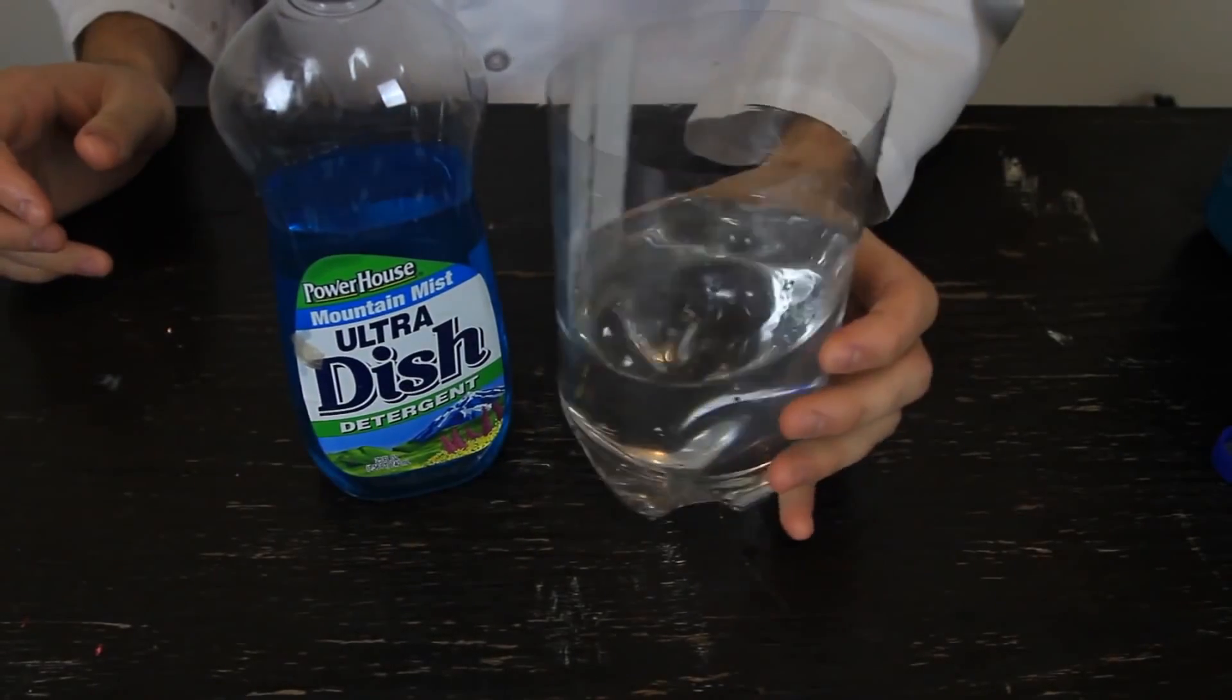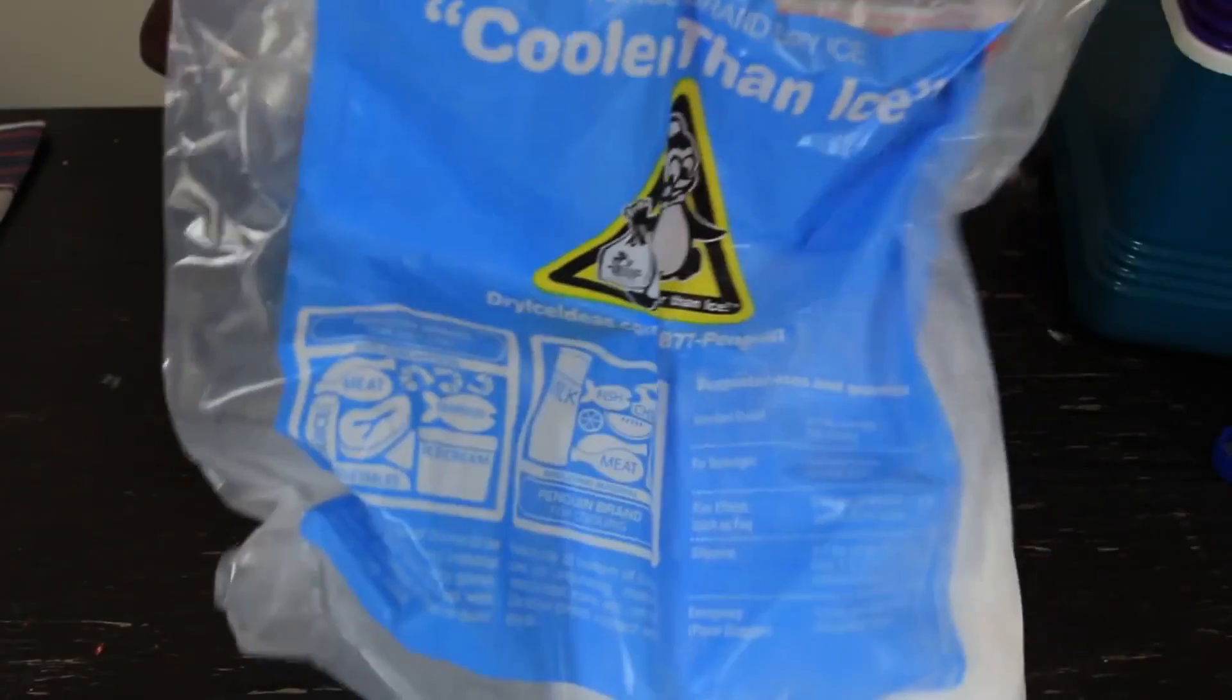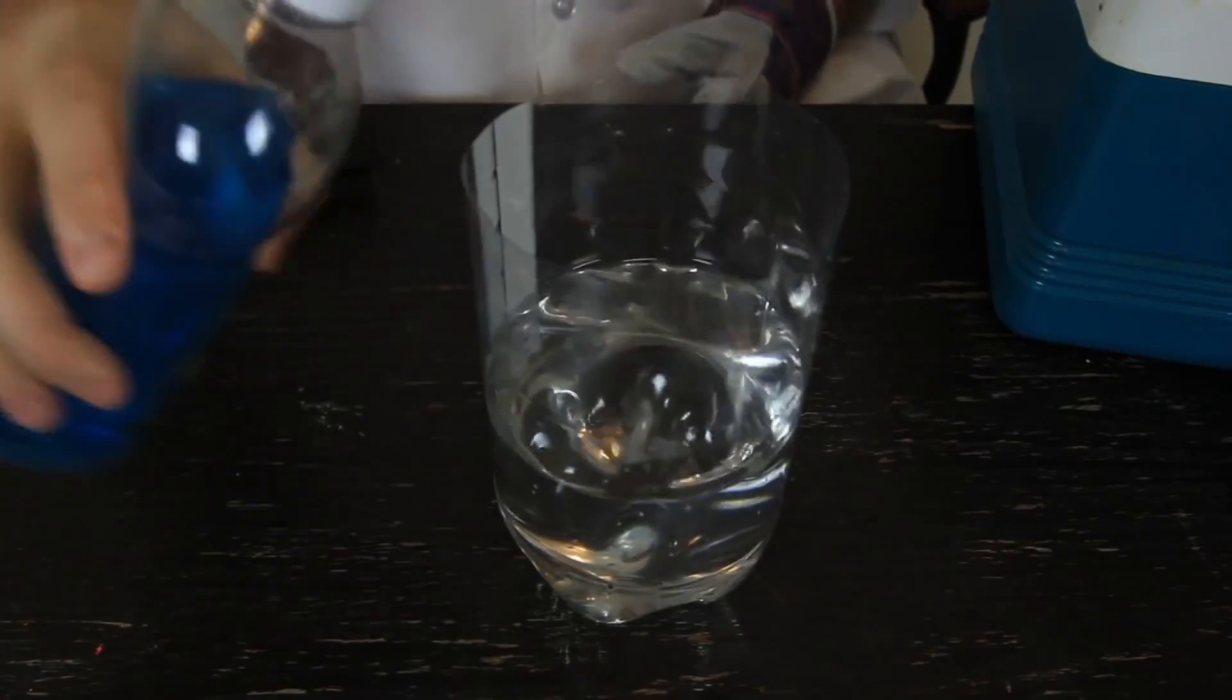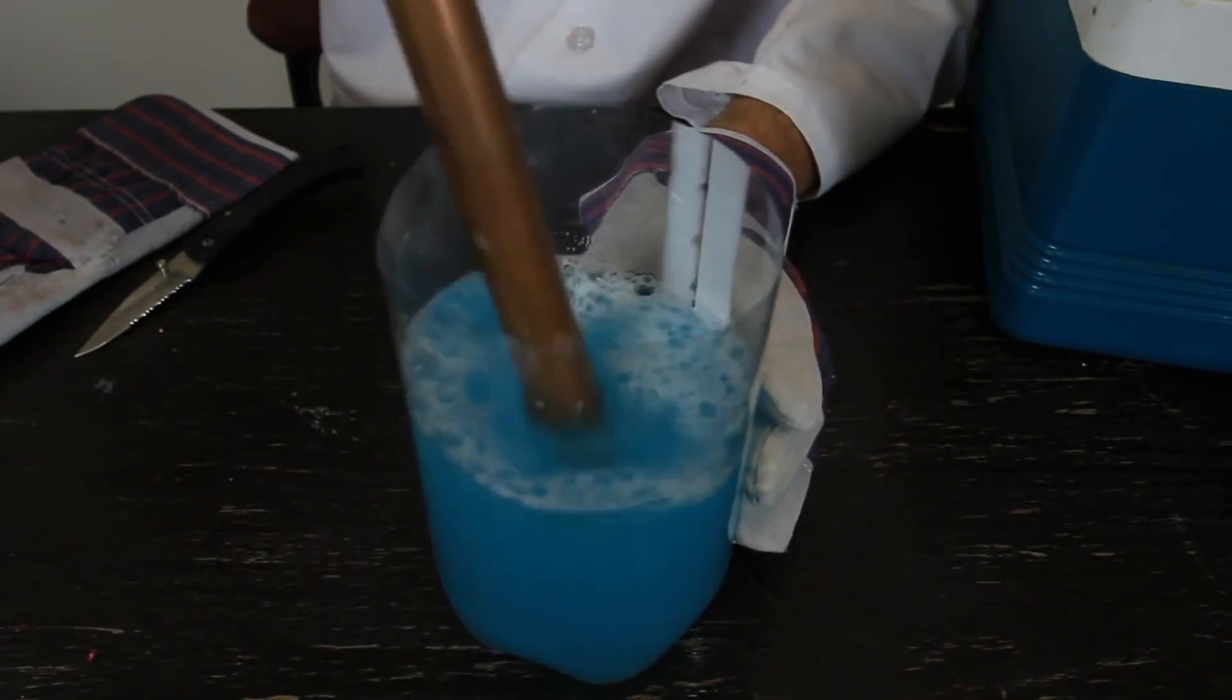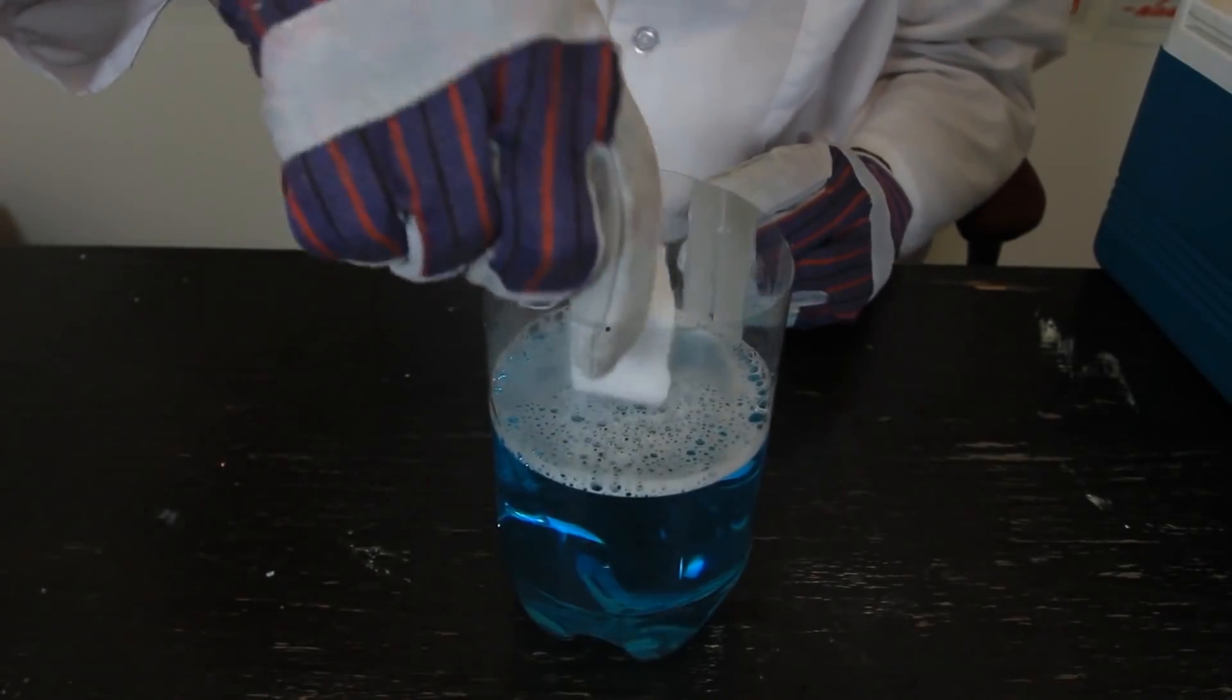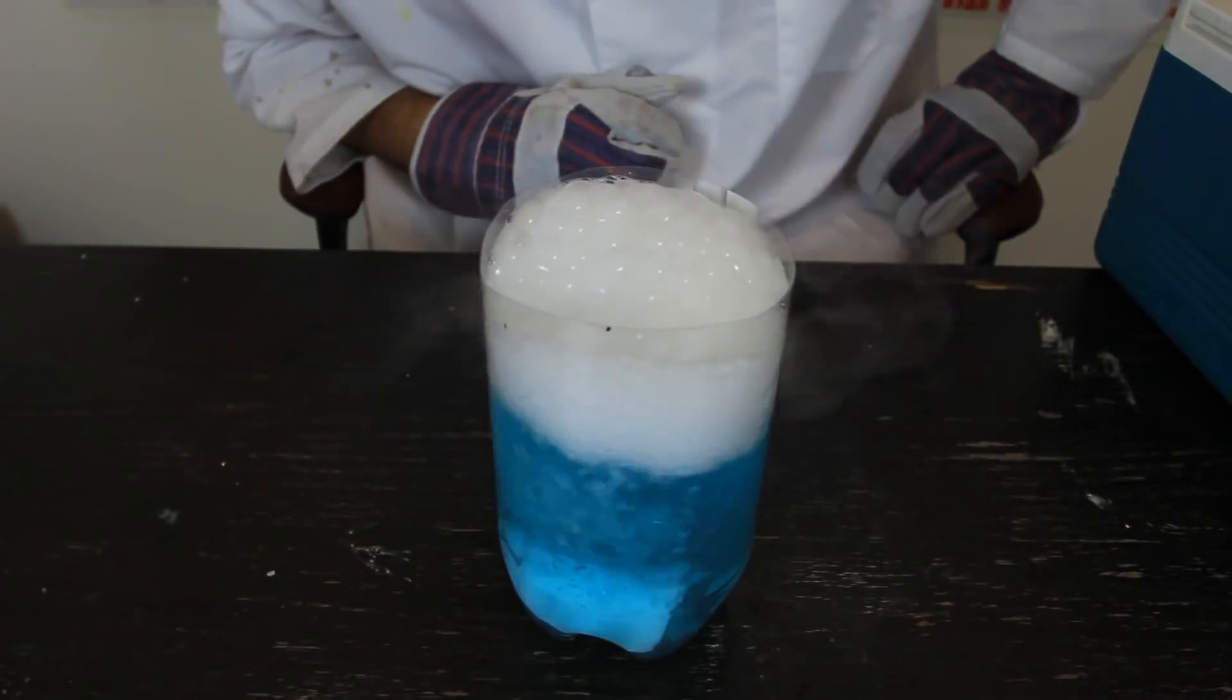For this experiment we're going to need dish soap, warm water with some kind of container, and most important, dry ice. Let's get to our experiment. So first we're going to pour some soap inside of the water. And then we want to mix it up so we get the soapy water. And then we're going to grab a piece of dry ice and put it into the soapy water. And let's see what happens.